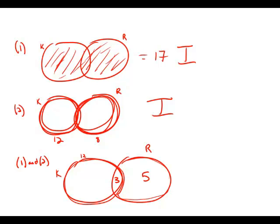Just checking to make sure this makes sense, K has 12. So if there are three in the overlap region, there must be nine here. And if we add this up, nine plus three plus five, that does add up to 17. So this does check out.